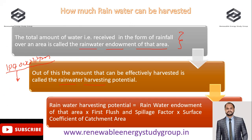Rainwater harvesting potential can be calculated in liters or cubic meters. The formula requires: first, the rainwater endowment of the area; then the first flush and spillage factor. Whenever the first rainfall happens on a specific area, we flush that rainwater because it contains multiple contaminants and bacteria.